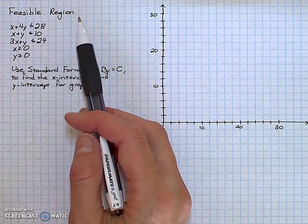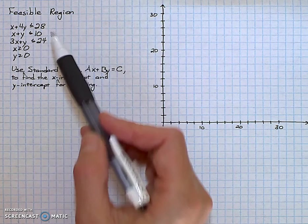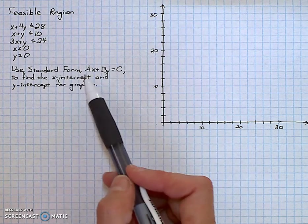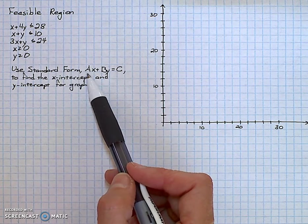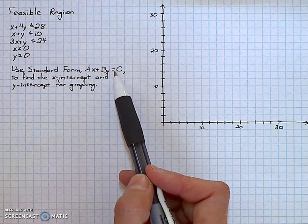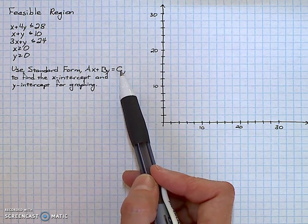Feasible region. I'll focus on graphing the feasible region, the system of linear inequalities. I'll be graphing with standard form. Standard form occurs when x and y are on the left hand side of the equal sign and the constant c is on the right.